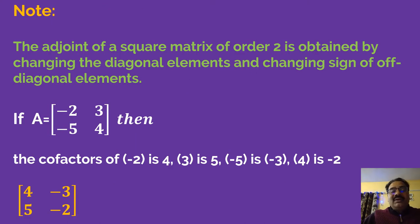Now a very interesting result for 2 cross 2 matrices: the adjoint of a square matrix of order 2 is obtained by changing the diagonal elements and changing the sign of off-diagonal elements.